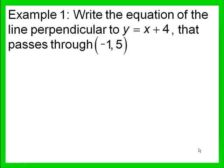We're going to write the equation of the line that is perpendicular to y equals x plus 4, and it passes through the point negative 1, 5. The first thing we want to do is find the slope of the given line. The slope of our given line is the coefficient of x, which is positive 1.